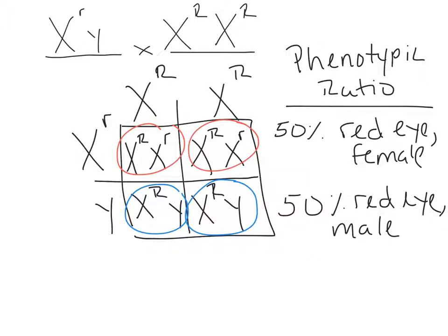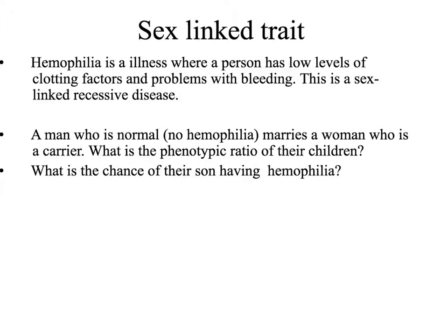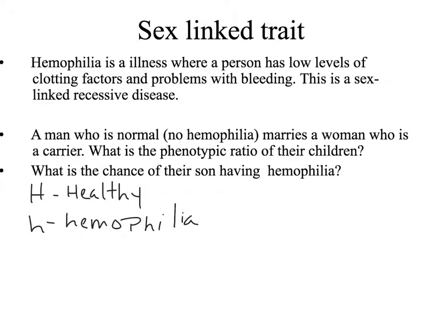Be sure when doing these problems that you give the full phenotype as well as the percentage. Hemophilia is a sex-linked disease we see in humans. First, we set up a key of alleles: big H dominant is a healthy individual, recessive little h is the one with hemophilia. In the problem, a man who is normal — no hemophilia — means he is X^H Y. He marries a woman who is a carrier. Remember, carrier is just another word for heterozygote, so she is X^H X^h.